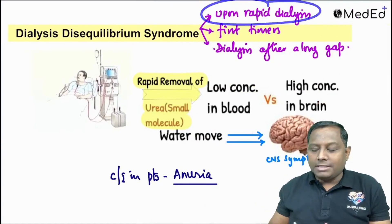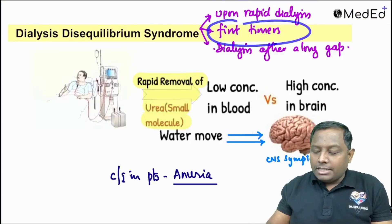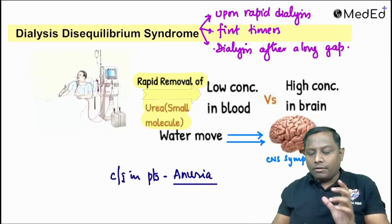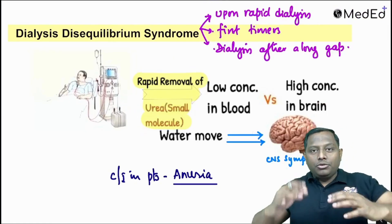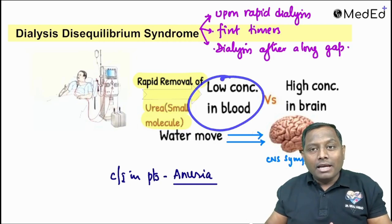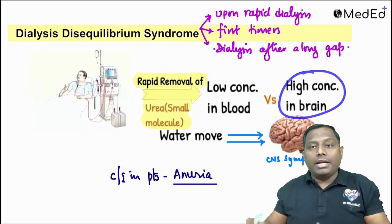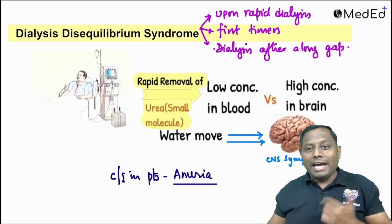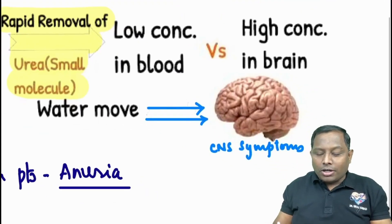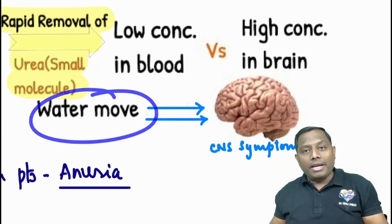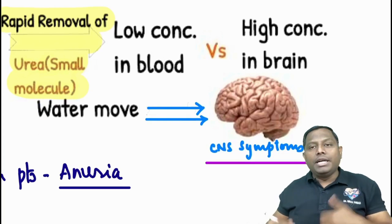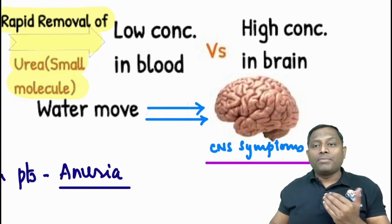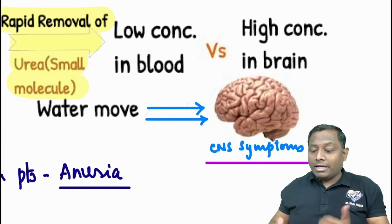Let me explain dialysis disequilibrium syndrome through a simple image. Whenever someone is having rapid dialysis, first-time dialysis, or dialysis after a very long gap, there will be rapid removal of urea and small molecules. Urea in the circulation will be lesser, while urea in the brain comparatively will be high, causing movement of water from circulation to the brain.